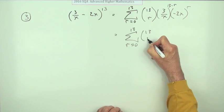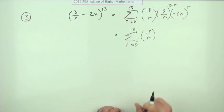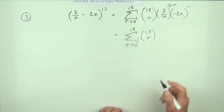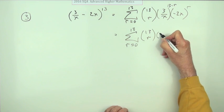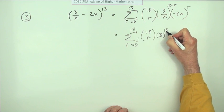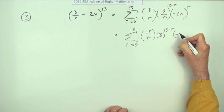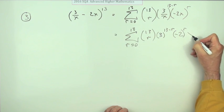Now separate out the parts. Get the coefficients to the front and then the x's to themselves. So there's a 3, that 3 will be to the power 13 minus r. There's a negative 2, that'll be to the power r.